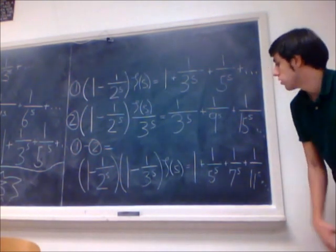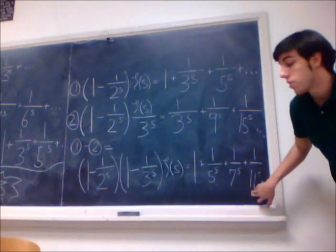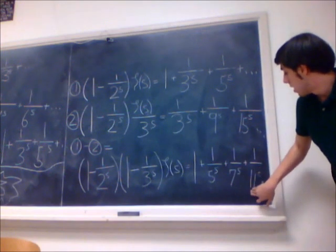Furthermore, and unsurprisingly, you'll notice that on the right side here, all the denominators are those numbers that are not divisible by 2 or 3. So these first three are prime, but not all of them will be.